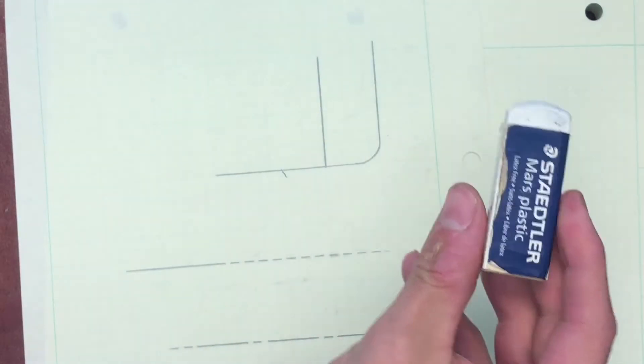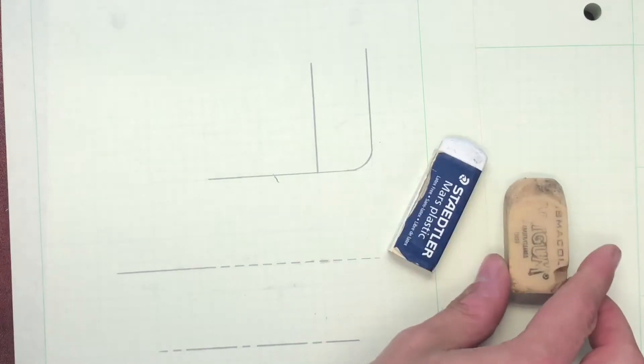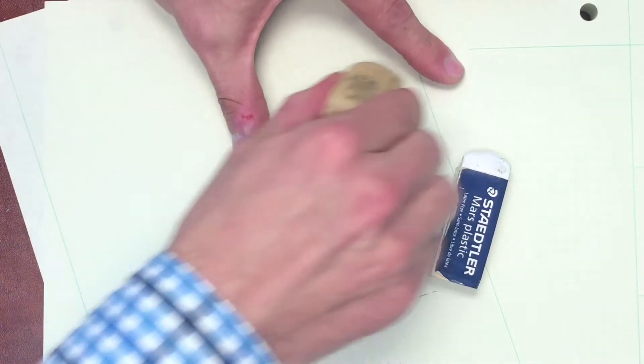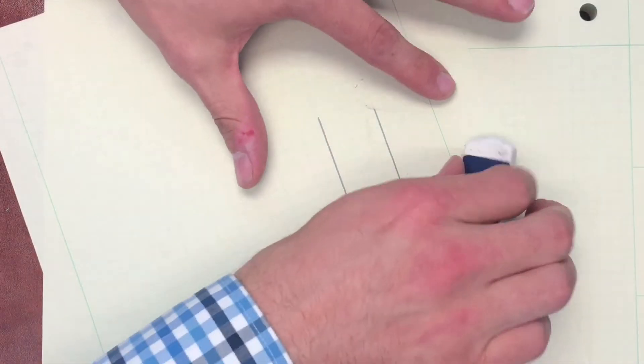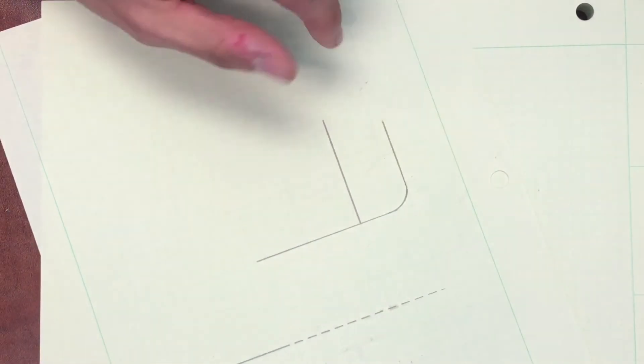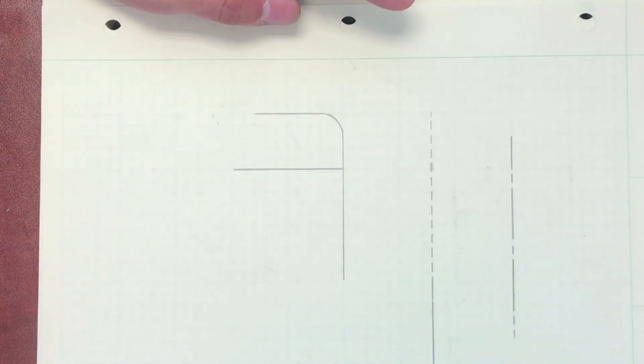So I find the eraser guard works best with the Mars plastic type erasers. You can use the art gum too, but the art gum just in general tends to smear a little bit. Whereas I think the Mars plastic is a cleaner erase. So anyways, hope that helps.